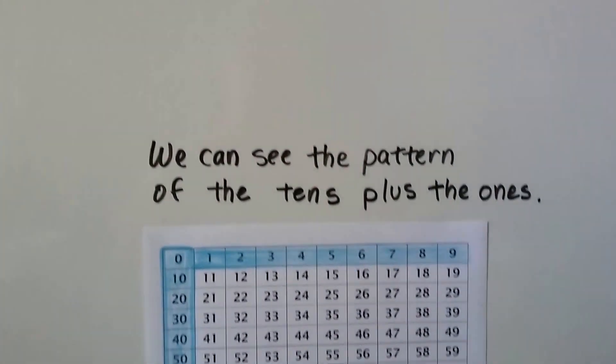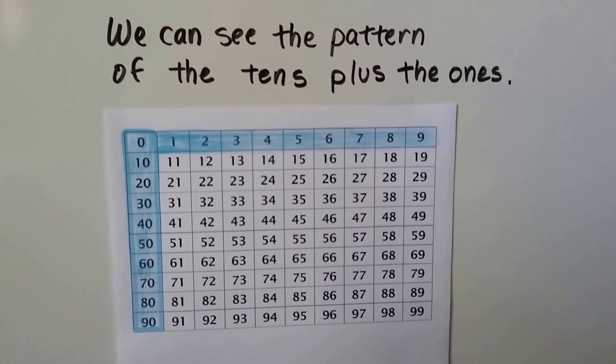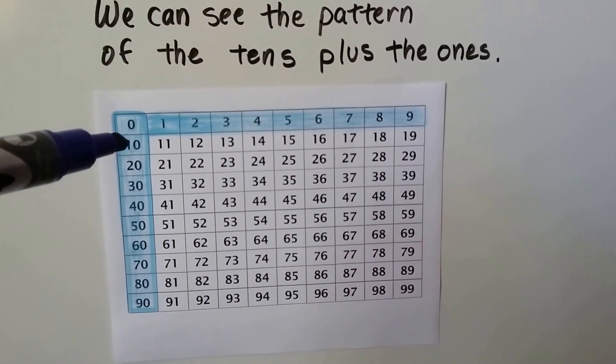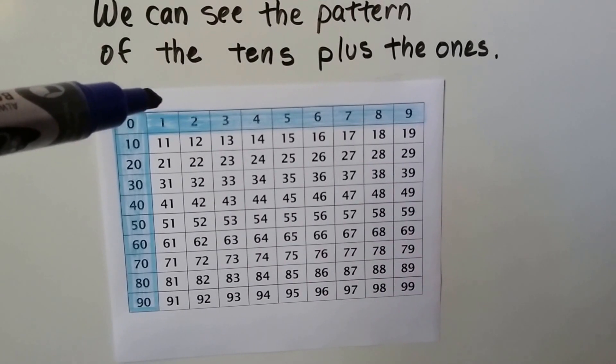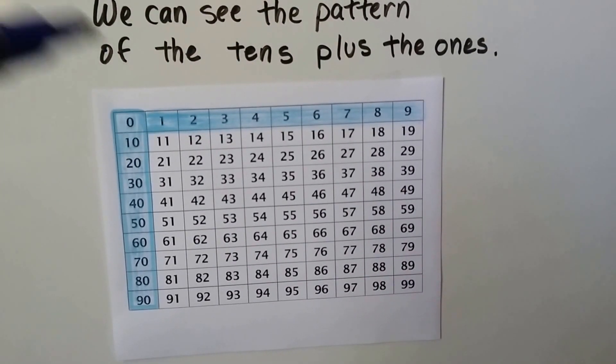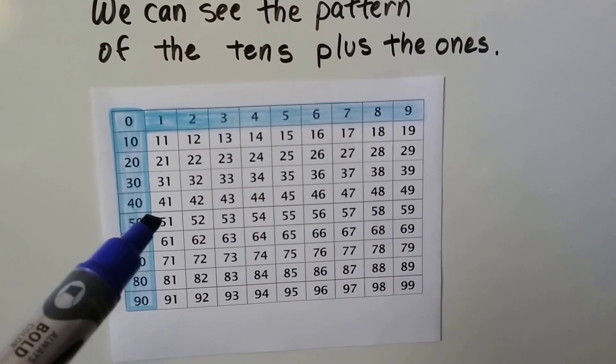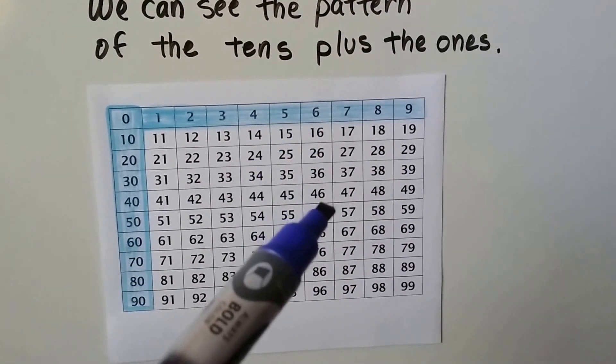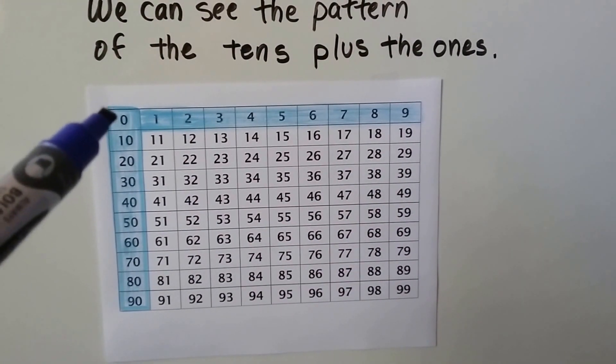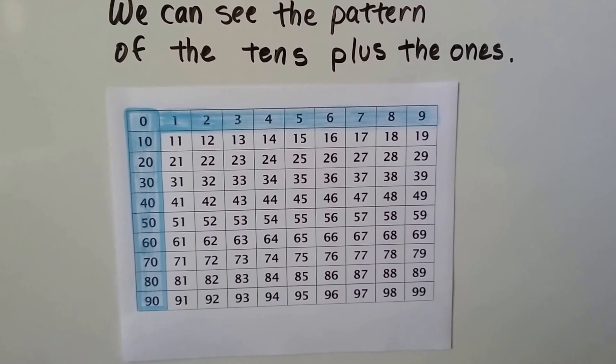We can see the pattern of the tens and the ones. See the tens plus the ones? We have a 10 and like an addition table if we add a 1 we're going to get an 11. If we have a 50 and we add a 6 we're going to get a 56. But that's because we're starting with a 0 up here.